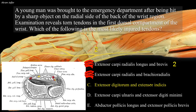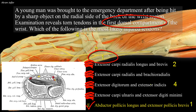Extensor digitorum and extensor indicis are located in the fourth compartment, more medially. Extensor carpi ulnaris and extensor digiti minimi do not share a single compartment — extensor carpi ulnaris is in the sixth compartment and extensor digiti minimi is in the fifth. Option E is the correct answer: abductor pollicis longus and extensor pollicis brevis pass in the first compartment, most laterally, forming the anterior border of the anatomical snuffbox.